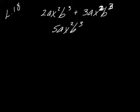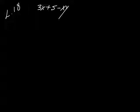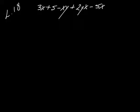If I had a string of terms together, like in example 18.1, they have: 3X plus 5 minus XY plus 2YX minus 5X. That's the expression they're giving me and they're asking you to go ahead and add like terms. So what do we have for like terms?